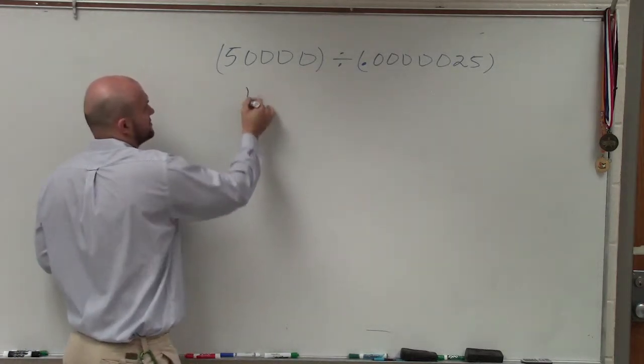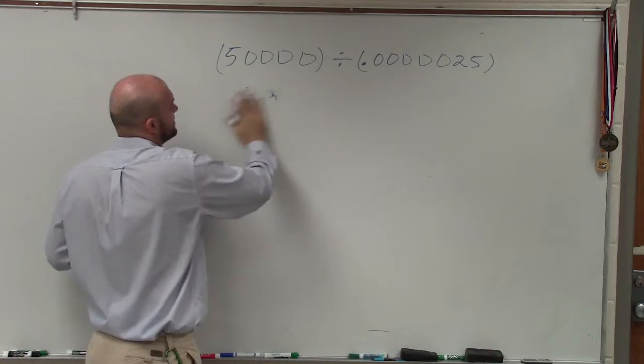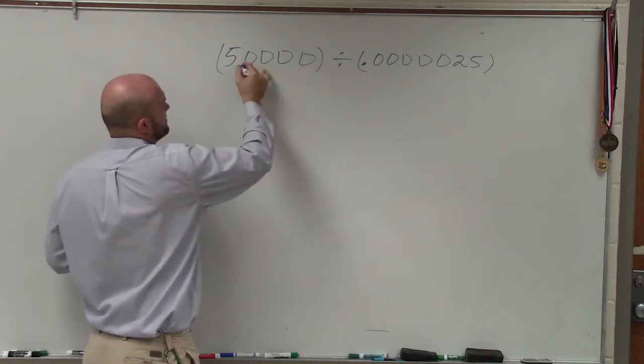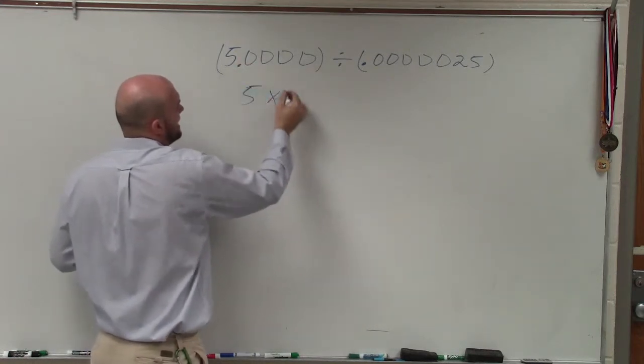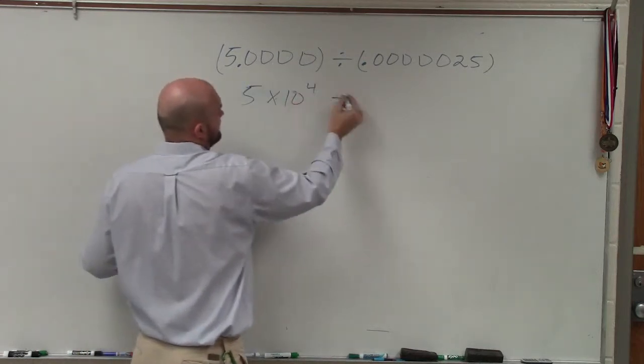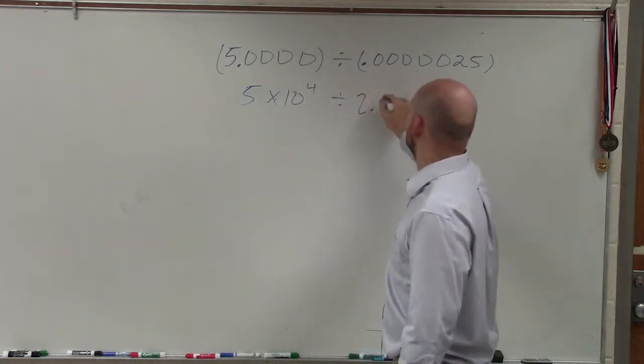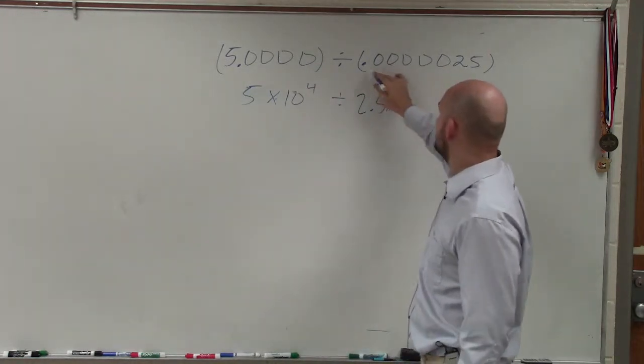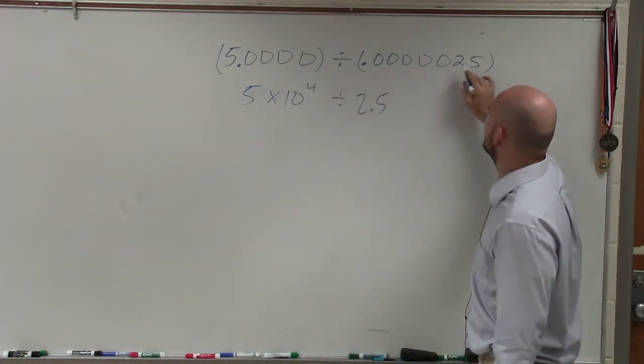To rewrite this in scientific notation, I have 10... oh, I'm sorry. I need to write that there. So I have 5 times 10. Going 1, 2, 3, 4. Divided by, I need to move this over to 2.5. And that would be 1, 2, 3, 4, 5, 6.